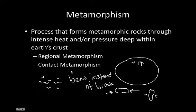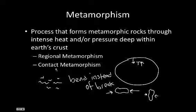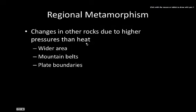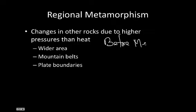This happens in one of a couple of places — either regionally or by contact. Regional metamorphism happens due to higher pressures than temperatures. Temperatures are still involved because it happens deep within the Earth, but the pressures are higher than the temperatures, and all of this happens before melting. This occurs over a very wide area, generally near mountain belts or at plate boundaries.